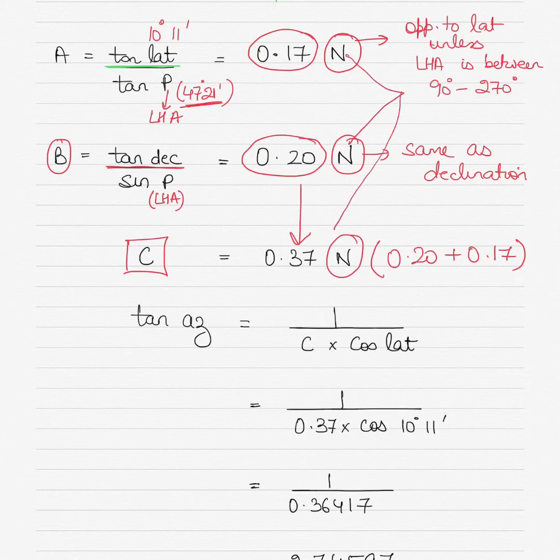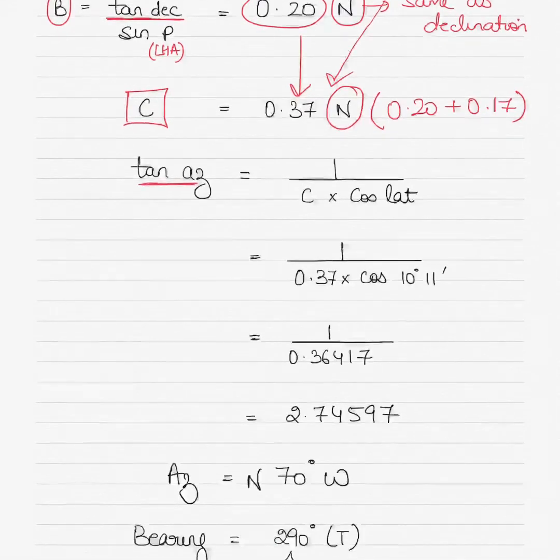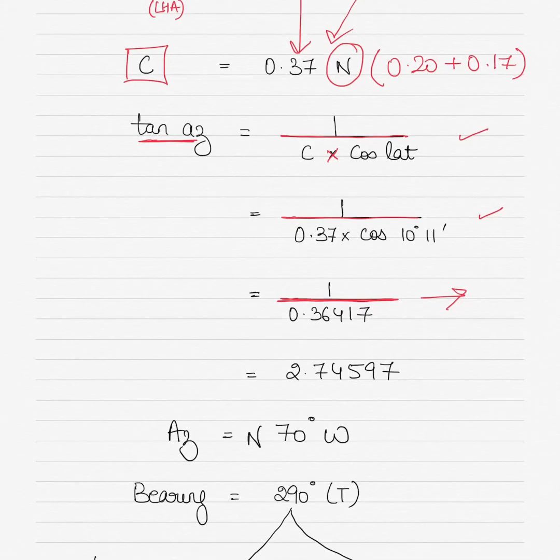Then tan of azimuth equals 1 divided by C times cos of latitude. C is 0.37, latitude is 10 degrees 11 minutes. Solve the denominator first, then divide one by it. What you get is tan of azimuth equals...